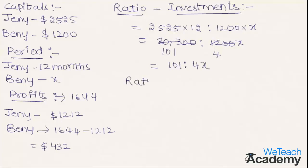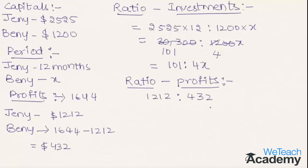Now let us find the ratio on their profits. Jenny's share of profit is $1,212 and Benny's share is $432. By simplifying this ratio we get 101 is to 36. Setting the investment ratio equal to the profit ratio, we have 101 : 4X = 101 : 36.